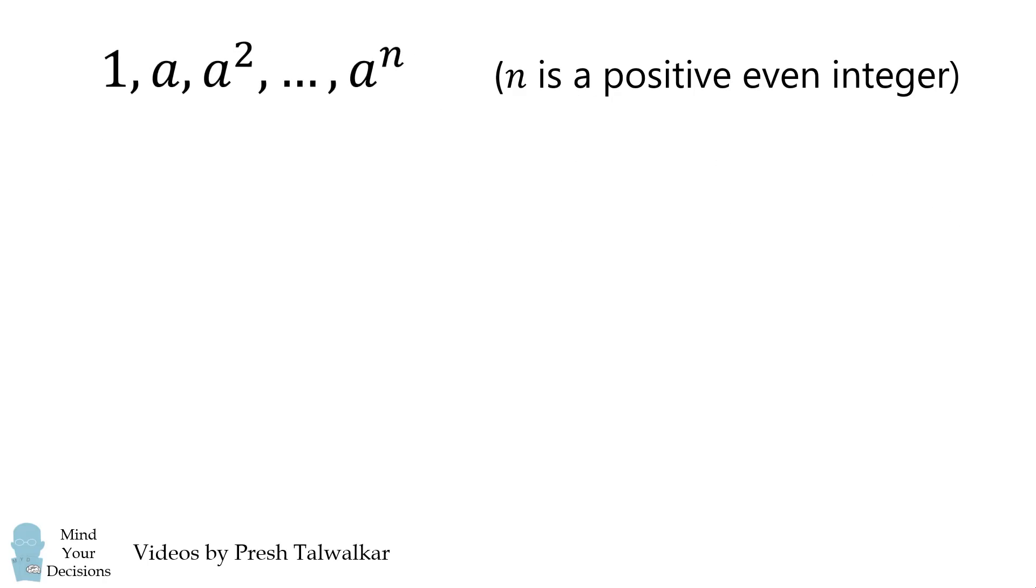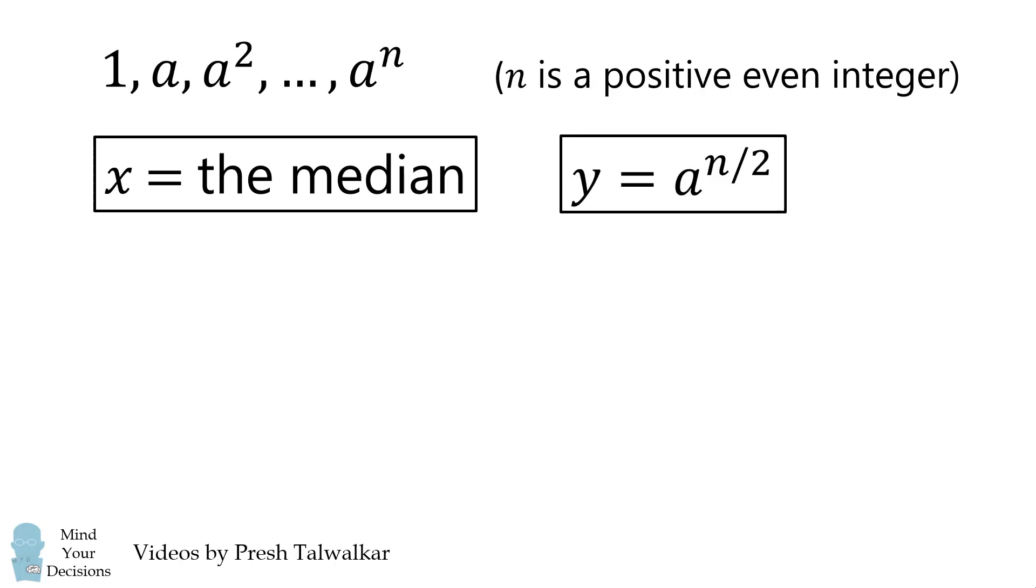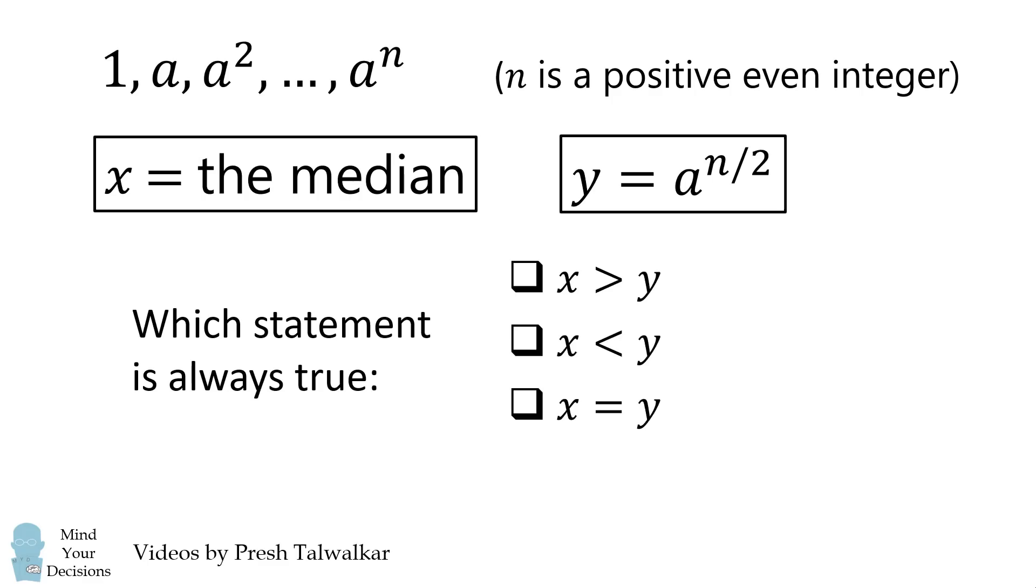We're going to define two variables. x is equal to the median of the sequence and y is equal to a to the power of n over 2. Which of the following statements is always true? x is greater than y, x is less than y, x is equal to y, or none of the above.